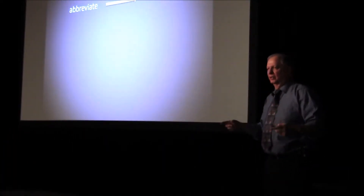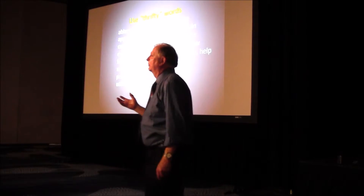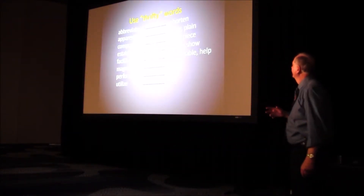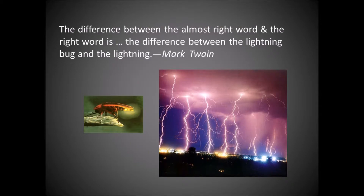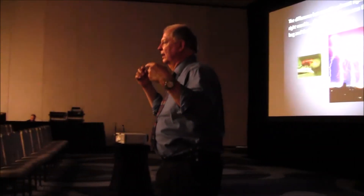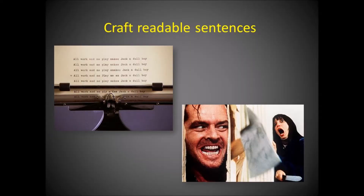I advocate using thrifty words rather than expensive words. If you look at all these words on the left, these are words that science loves to use. It's really hard to get out of the habit of not using thrifty words, but they put a lower cognitive load on your readers. Choose the best word. My favorite saying is: the difference between the almost right word and the right word is the difference between the lightning bug and the lightning — Mark Twain was really right on when he said that. A lightning word is one that is vivid, engaging, and thrifty. It really grabs the reader.